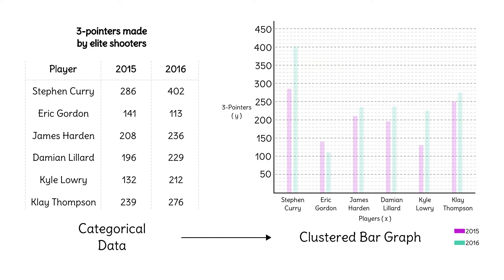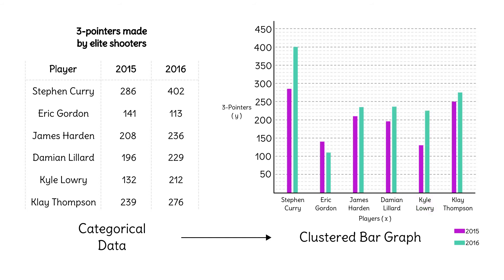Who was the next most improved? Kyle Lowry. He improved by about 80 three-pointers. Clustered bar graphs can make visualizing and comparing categorical data as effortless as a Steph Curry three-point shot.